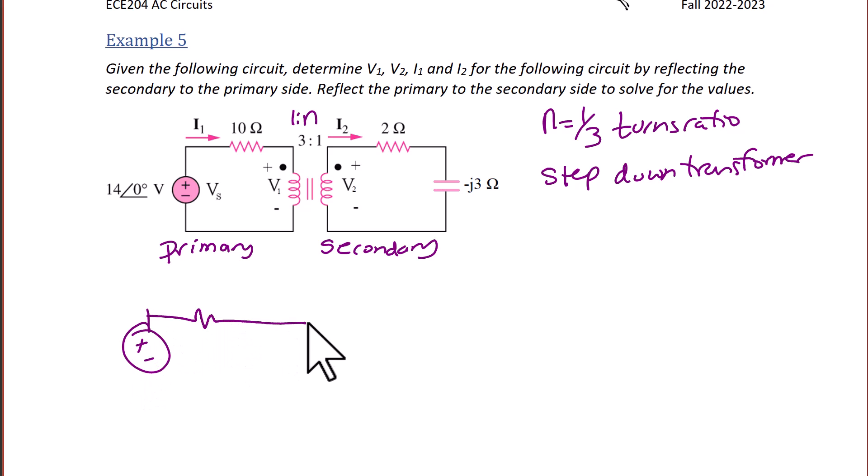Now in order to reflect the primary to the secondary, we sketch the circuit as one loop and copy down the values for the secondary: 2 ohms and negative J3 ohms and V2, where the reflective values are going to be V1 prime, VS prime, and RS prime. We have V1 prime is going to equal V2. VS and RS are 14 angle 0 degrees in volts, and RS is 10 ohms.